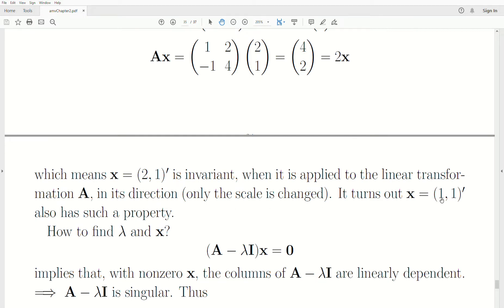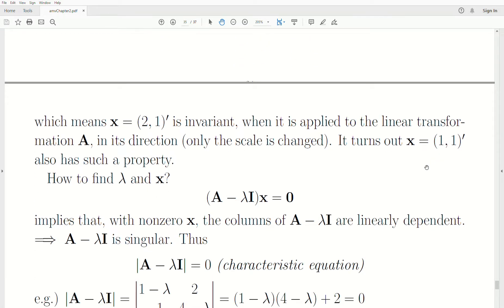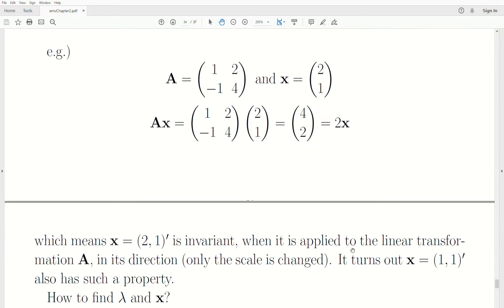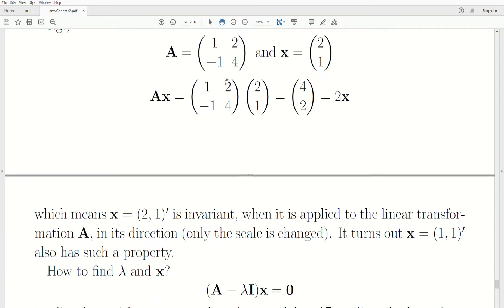It turns out that there's another eigenvector (1, 1) that has the same exact property. So when a matrix dimensions is 2 by 2, then there's two eigenvalues and two eigenvectors.